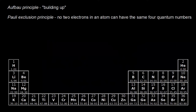Let's look at how to write electron configurations for the first period. Here's the first period in the periodic table, and we have only two elements to worry about — hydrogen and helium. Let's start with hydrogen, atomic number of one.